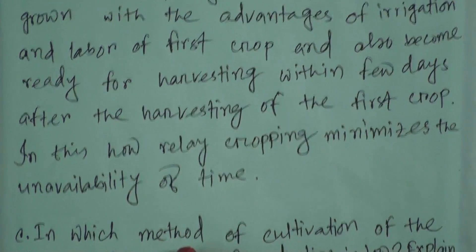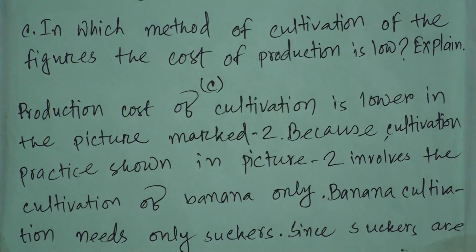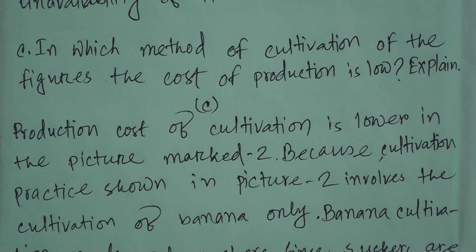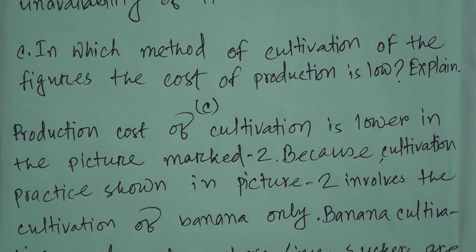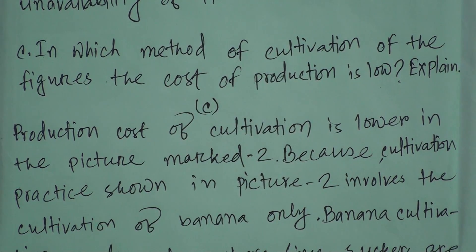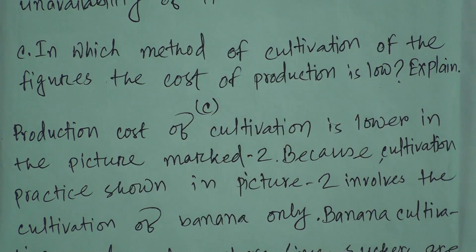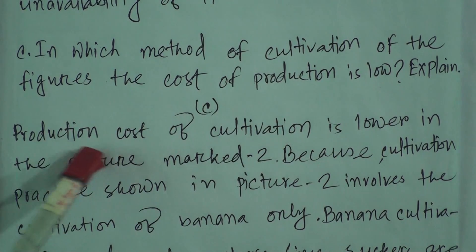Number C: In which method of cultivation shown in the figures is the cost of production lower? In the book, you can see two pictures — one is relay cropping and another is the cultivation of banana. For banana cultivation, only suckers are needed, and if suckers are available, anyone can cultivate it. But for relay cropping, farmers need to collect seeds, apply fertilizer, and so on. From this, figure 2 — cultivation of banana — is much cheaper for the farmer.